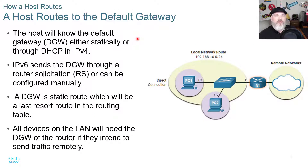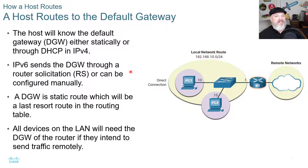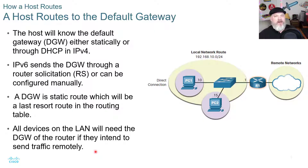A host routes to a default gateway. The host will know the default gateway either statically or through DHCP on IPv4. IPv6 sends the default gateway through a router solicitation, or it can be configured manually. The default gateway is a static route, which will be a last resort route in the routing table. All devices on the LAN will need the default gateway of the router if they intend to send traffic remotely.